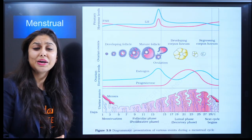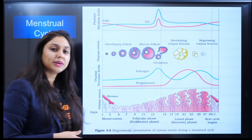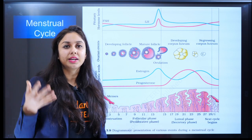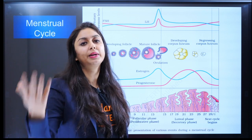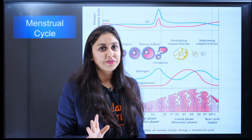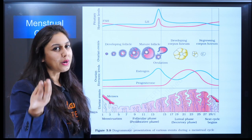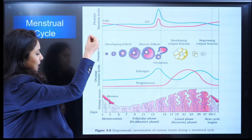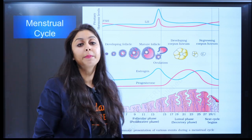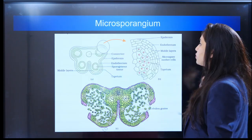Then the menstrual cycle — if you are preparing for NEET, you know how important this is, and the same goes for boards. Every alternate year, or after three or four years, you can see that you have to explain the menstrual cycle in five marks. If you have to draw this, it's a very good thing. It also gives a very good idea of which phase — menstrual phase, follicular phase, secretory phase, ovulatory phase — and what's happening in each phase. So you can go through that.